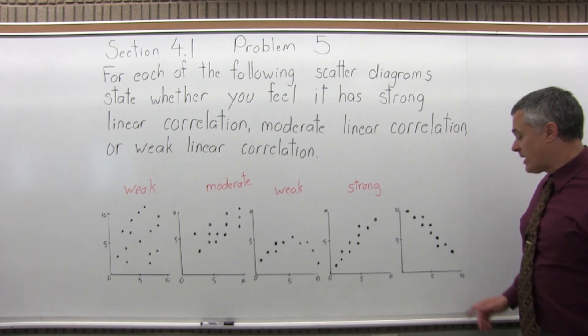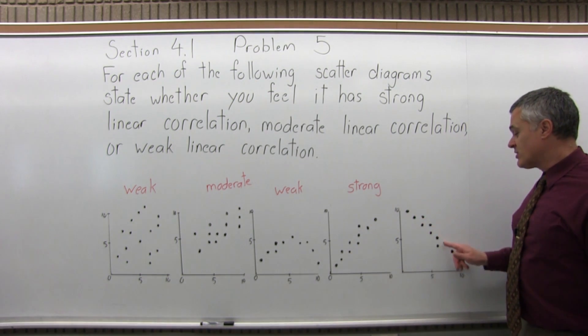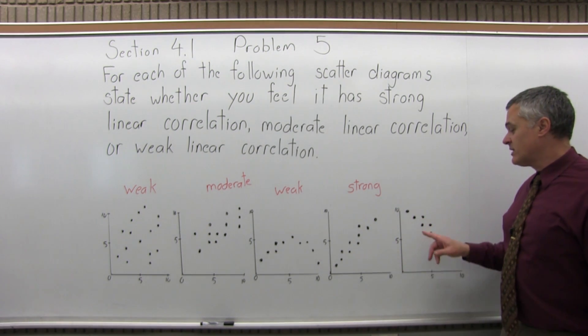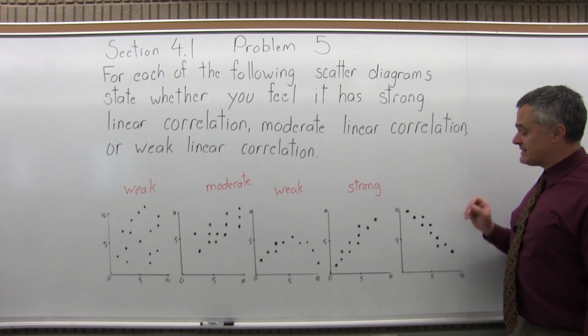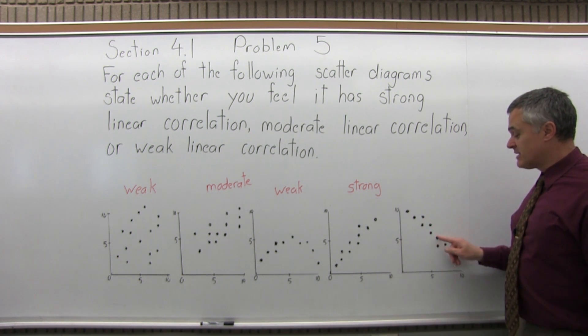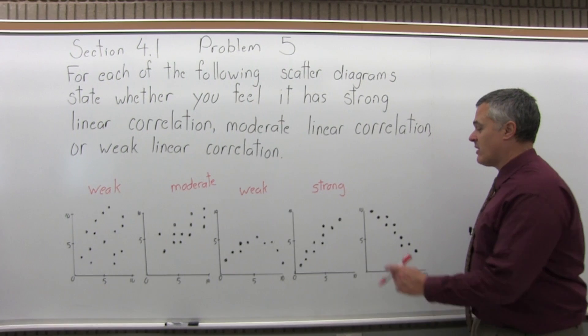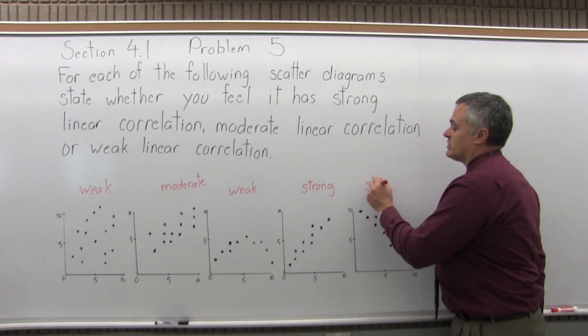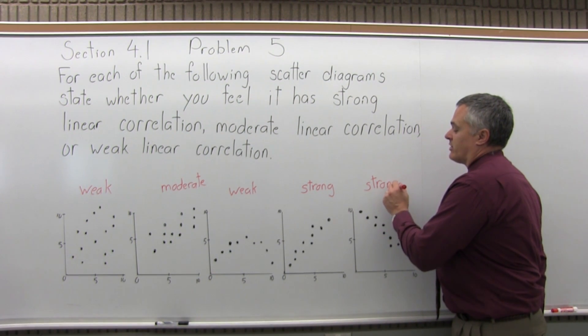And the same for the last one. The last one is going down as you go left to right, which is perfectly okay. Again, it's not exactly on a line, but it's pretty close. You can clearly see where the line would go. So for the last one, I would also say strong linear correlation.